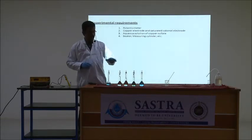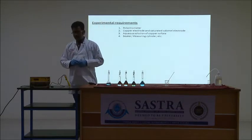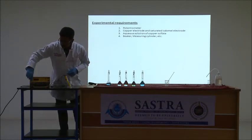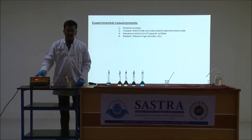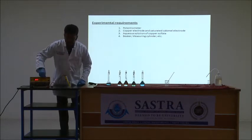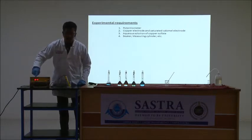Once these solutions are ready, there is also an unknown copper sulfate solution. Before beginning the experiment, switch on this instrument. This potentiometer has an input standard cell. To calibrate it, adjust this knob towards standard — it should show a value of 1.018 volts.